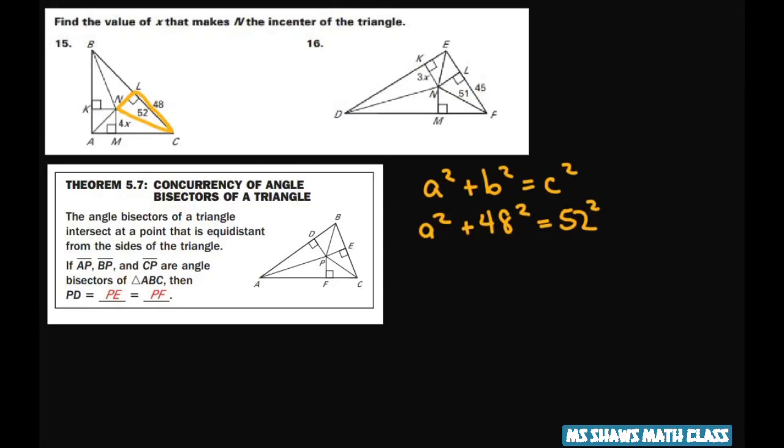So when you use the Pythagorean Theorem, you're going to get 52 squared, which equals 2,704, minus 48 squared, which is 2,304. You subtract those two and you get 400 equals a squared. So when you square root both sides, you take the positive value. So a equals 20.